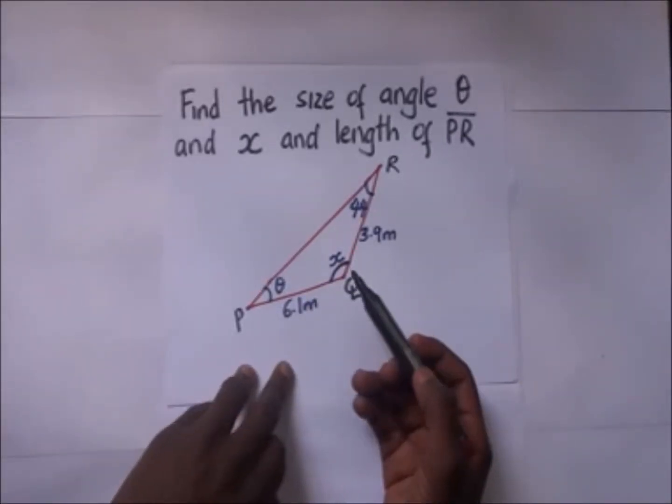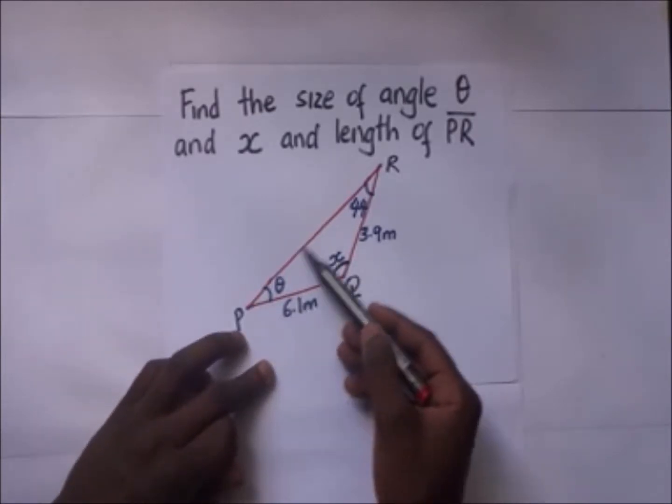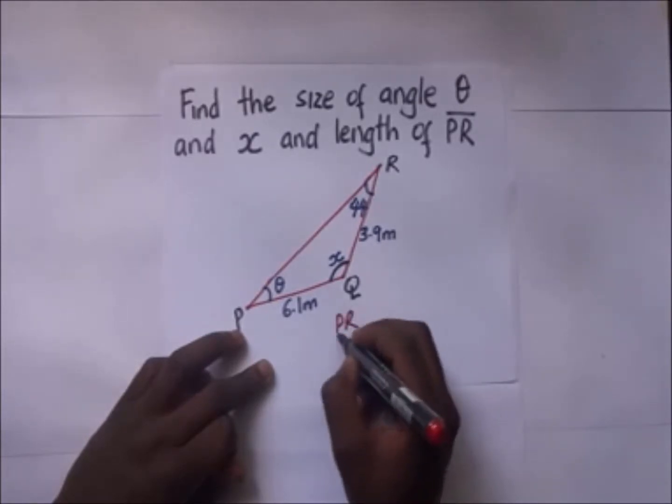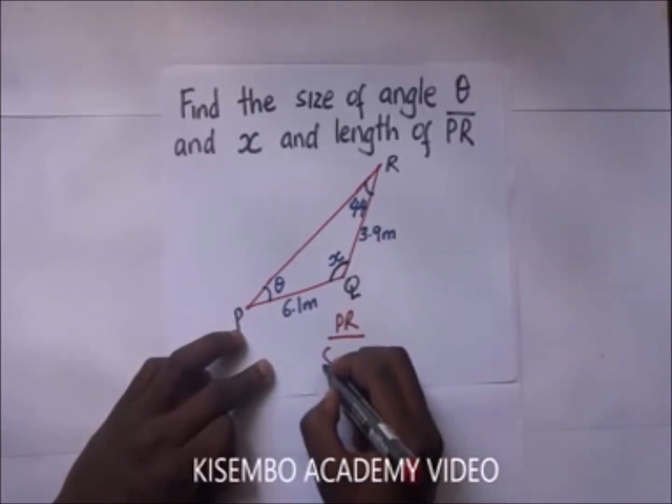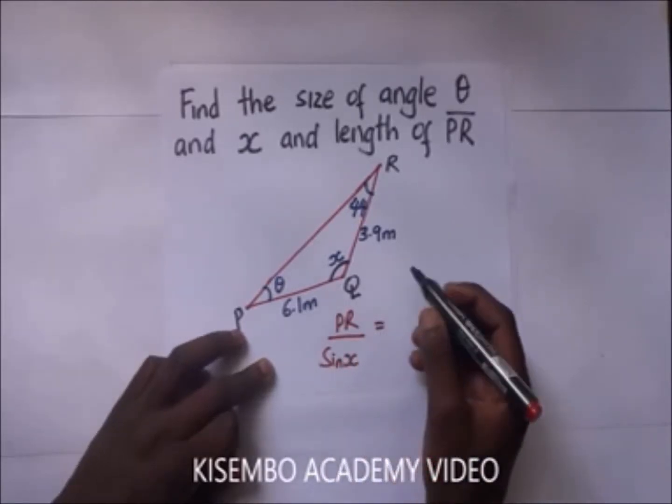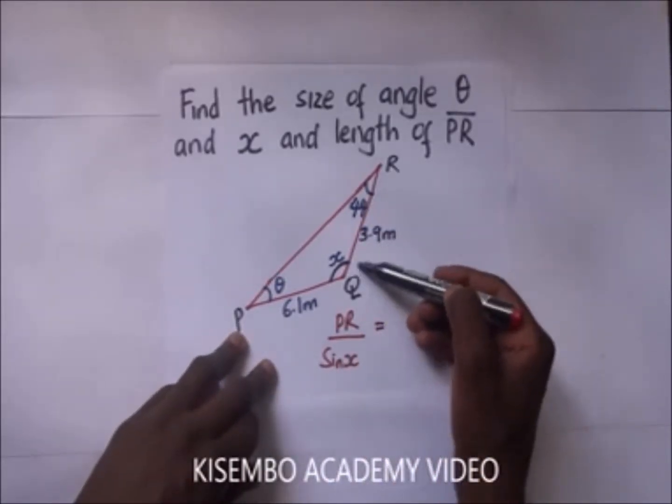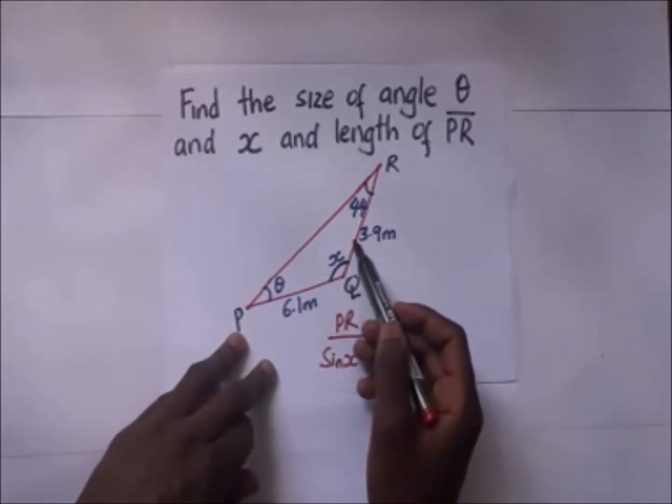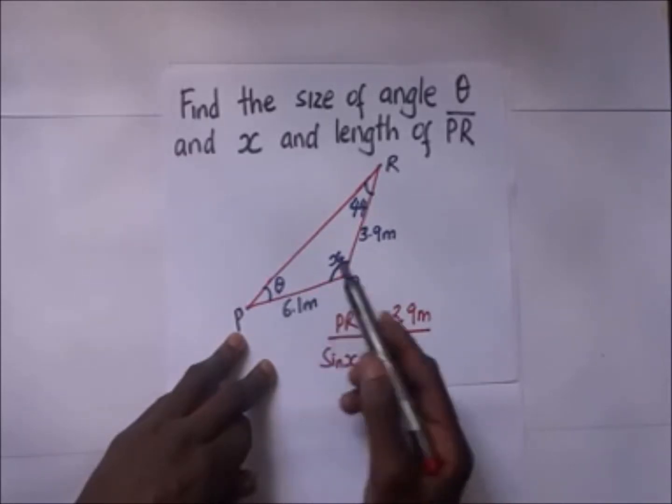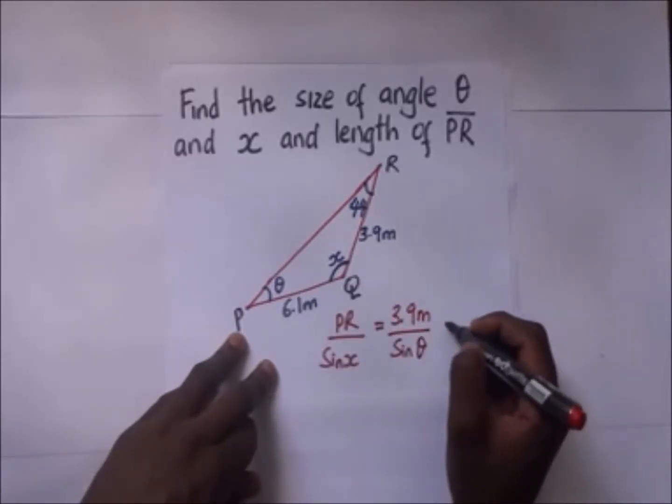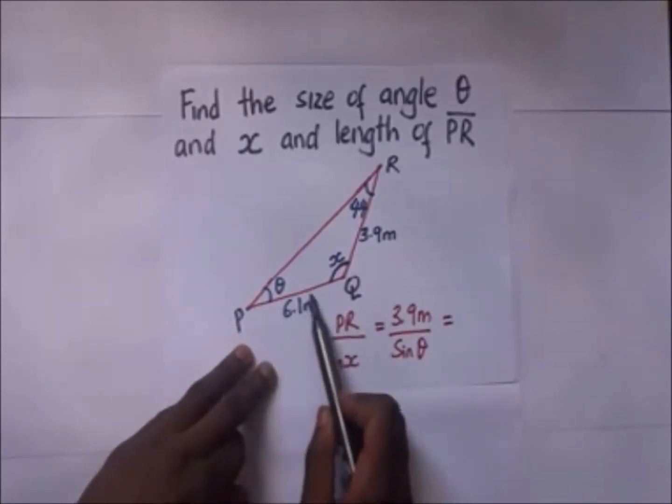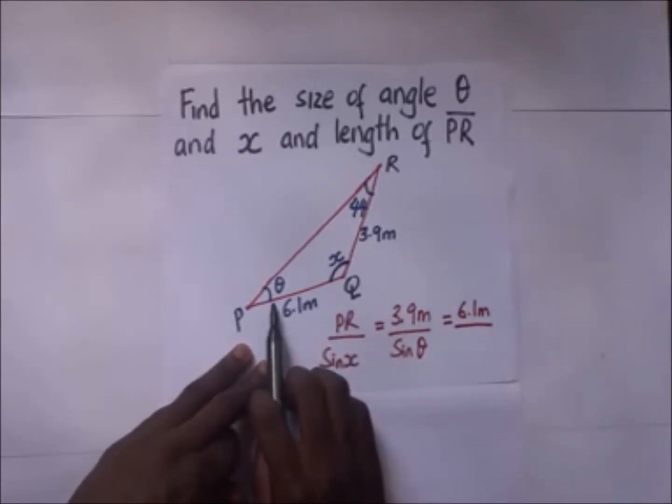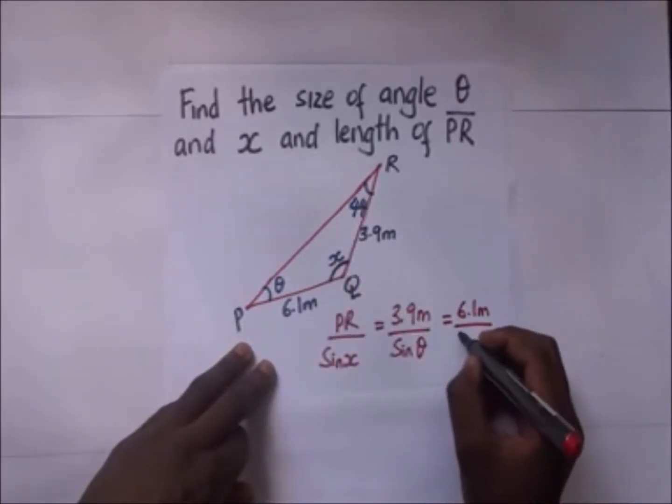The sine rule here is meaning it is going to be a line over an angle. So we have line PR over the sine of the angle that is opposite it, which is sine of x, supposed to be equal to the line 3.9 meters divided by the sine of the angle that is opposite it, which is supposed to be giving us line 6.1 meters divided by the angle opposite, which is 44, the sine of that angle.